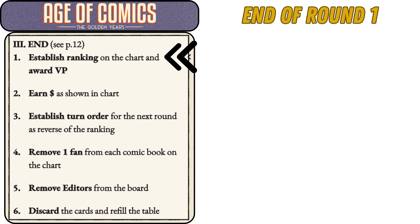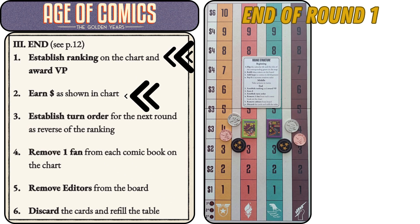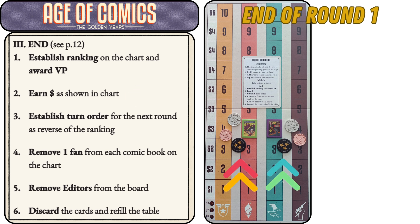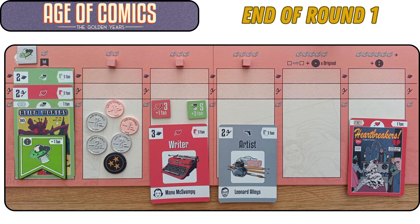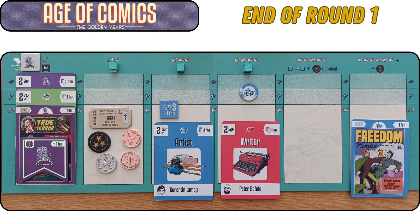End of round one — phase three. Step one: establish ranking on the chart and award victory points. Step two: earn money as shown in the chart. Salmon gains a three-star victory point for first place and three dollars in revenue. Teal also gains a three-star victory point for tying first place and earns three dollars in revenue. Here we can see the cards, unfulfilled sales order tiles, and money earned by Firm A — Salmon. Here we can see the cards, idea tokens, super transport ticket, unfulfilled sales order tiles, and money earned by Firm B — Teal at the end of the round.